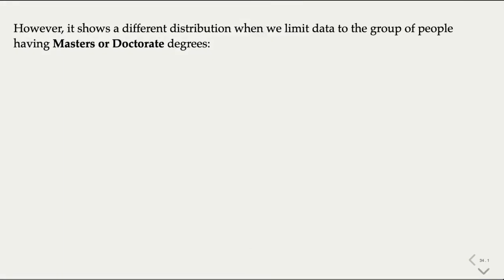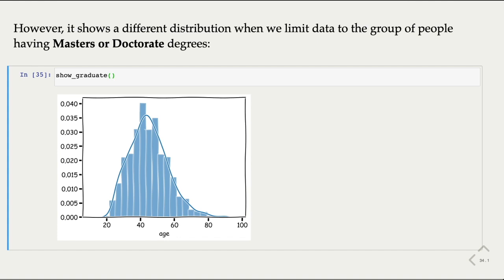Now, if we limit the data to the group of people having masters or doctorate, we are looking at a very different distribution. And we can tell that the distribution now is centered around an older age. If we assume this to be a normal distribution, it then becomes very unlikely for a working class adult with a graduate degree to be 20 or younger. These are potential outliers. They are, in fact, contextual outliers. And the context here is defined by a graduate degree.